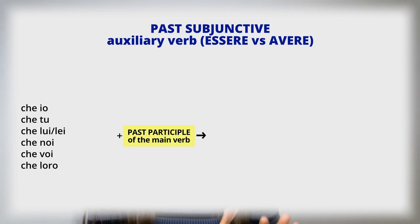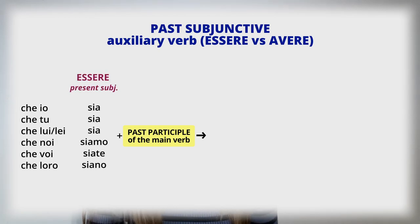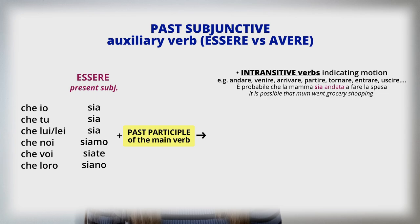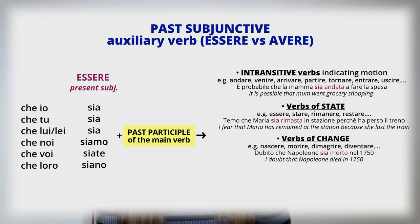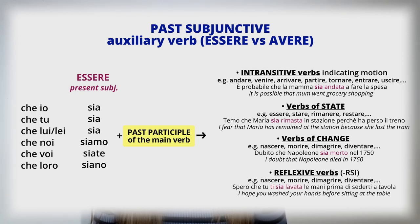'Avere' is also used with certain intransitive verbs: 'è possibile che abbiano dormito fino alle 11.' The auxiliary 'essere' is used for intransitive verbs of motion — andare, venire, arrivare, partire, tornare, entrare, uscire: 'è probabile che la mamma sia andata a fare la spesa.' With verbs of state — essere, stare, rimanere, restare: 'temo che Maria sia rimasta in stazione perché ha perso il treno.' With verbs of change — nascere, morire, dimagrire, diventare: 'dubito che Napoleone sia morto nel 1750.' And with reflexive verbs: 'spero che tu ti sia lavata le mani prima di sederti a tavola.'